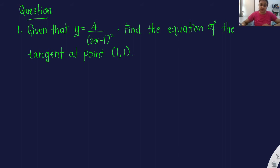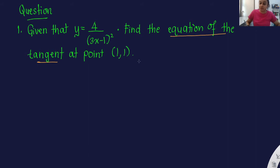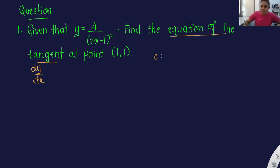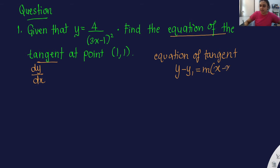Now let's look at the first question. You're given that y equals 4 over (3x minus 1) squared. Find the equation of the tangent — that is our keyword. Find the equation of the tangent at the given point. The point is already given, so x and y are already given. If I want to find the equation of tangent, I need to find dy/dx, the gradient of tangent first.